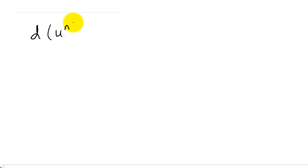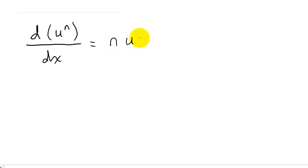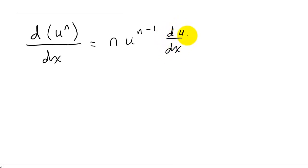Let's look at taking the derivative using the chain rule. The chain rule states that if we have the derivative of some function u raised to the n power with respect to x, then that is equal to n times u to the n minus 1 times the derivative of u. We take the exponent, bring it down in front, subtract one, and multiply by the derivative of the function.